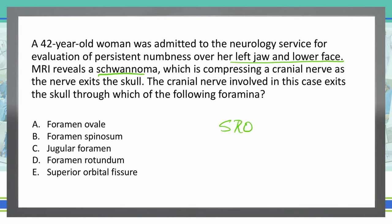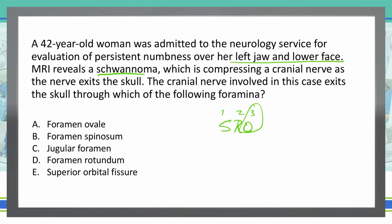So we're talking about the third division of cranial nerve 5, which is going to come out of O, or foramen ovale. So we look through the answer choices and we find A, foramen ovale, is our final answer.